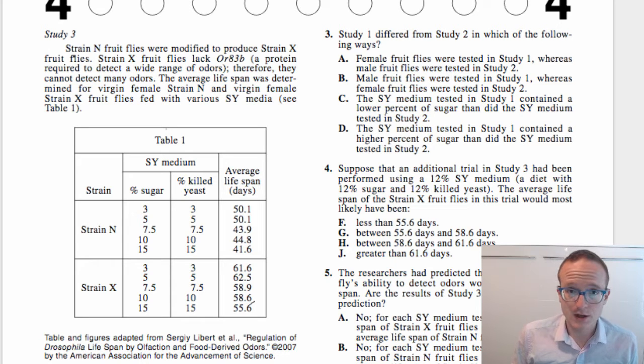So here they've got different SY medium percentages. So remember we already looked at a graph with 5 and 15, but here there's a lot of intervening values. So they go from 3 to 15, and they give you the average lifespan in days on the right column. So N and X, we know this is smell and no smell, basically.